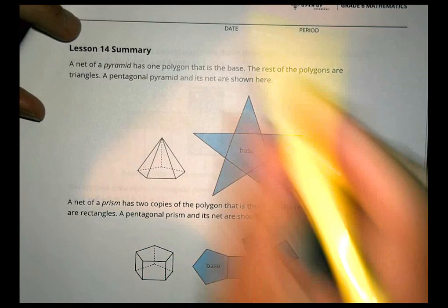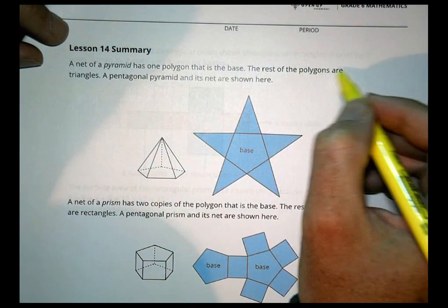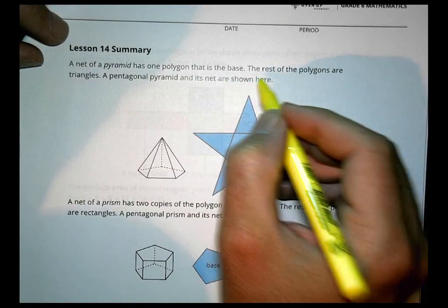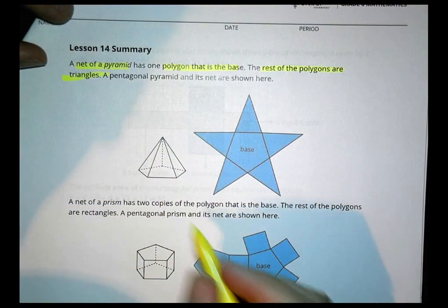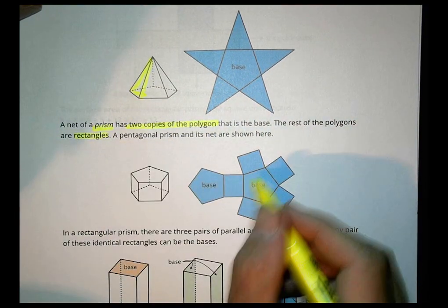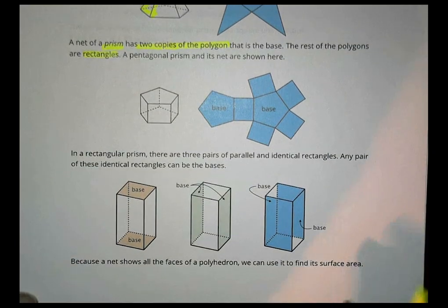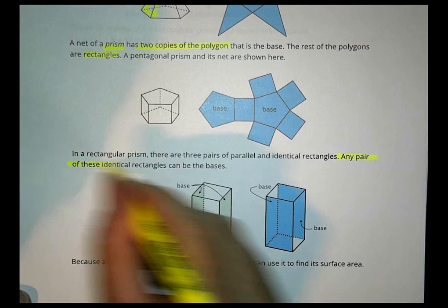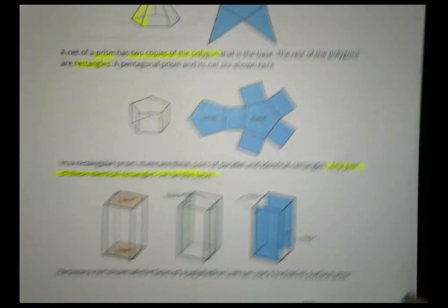Quickly in summary: a net of a pyramid has one polygon that is the base, and the rest of the polygons are triangles. A pentagonal pyramid and its net are shown here. A net of a prism has two copies of a polygon as the base, and the rest are rectangles. In a rectangular prism, there are three pairs of parallel and identical rectangles. Any pair of these identical rectangles can be the base — whether you go top and bottom, sides, or front and back, they're all identical.